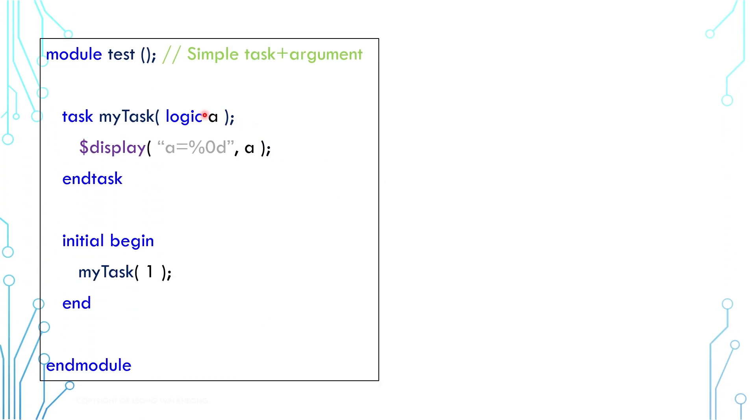This is a simple task example. The task has an argument A, and it simply prints out the value of A.